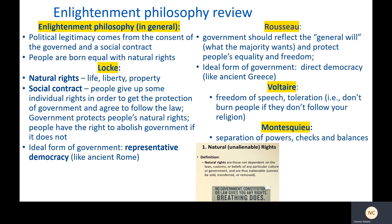Similarly, Locke's ideal form of government — representative democracy, like ancient Rome's Republic — would prove to be really influential in political revolutions moving forward. Rousseau's idea of the general will also proved pretty influential: the idea that government should reflect what the people generally want and strive to protect people's equality and freedom. Rousseau's ideal form of government, direct democracy, also proved influential, but also proved very difficult to put into place.